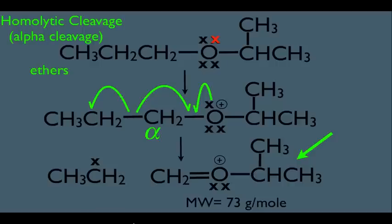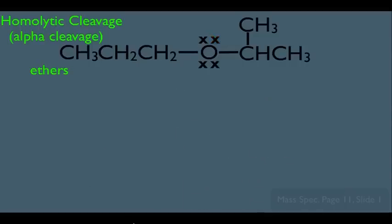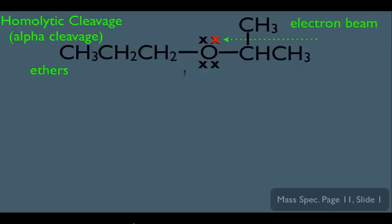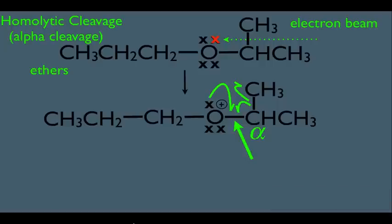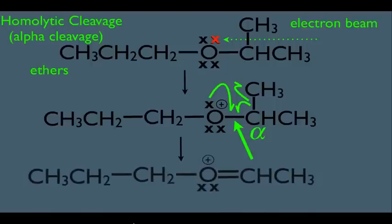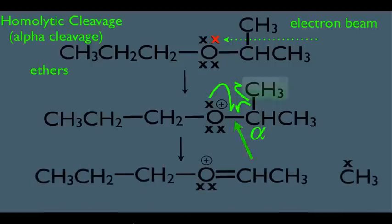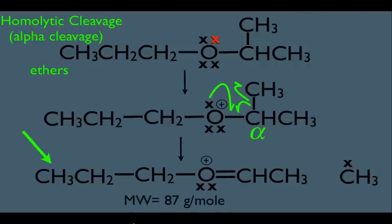With ethers, you can alpha cleave on either side of the oxygen. Looking at the right-hand side, this carbon would be the alpha carbon, and the electron movement for alpha cleavage looks the same — the bond following the alpha carbon breaks, forming a new double bond between the alpha carbon and the oxygen. The resulting charged fragment would be detected by the mass spec, so expect a peak at 87. The neutral methyl radical would not be detected.